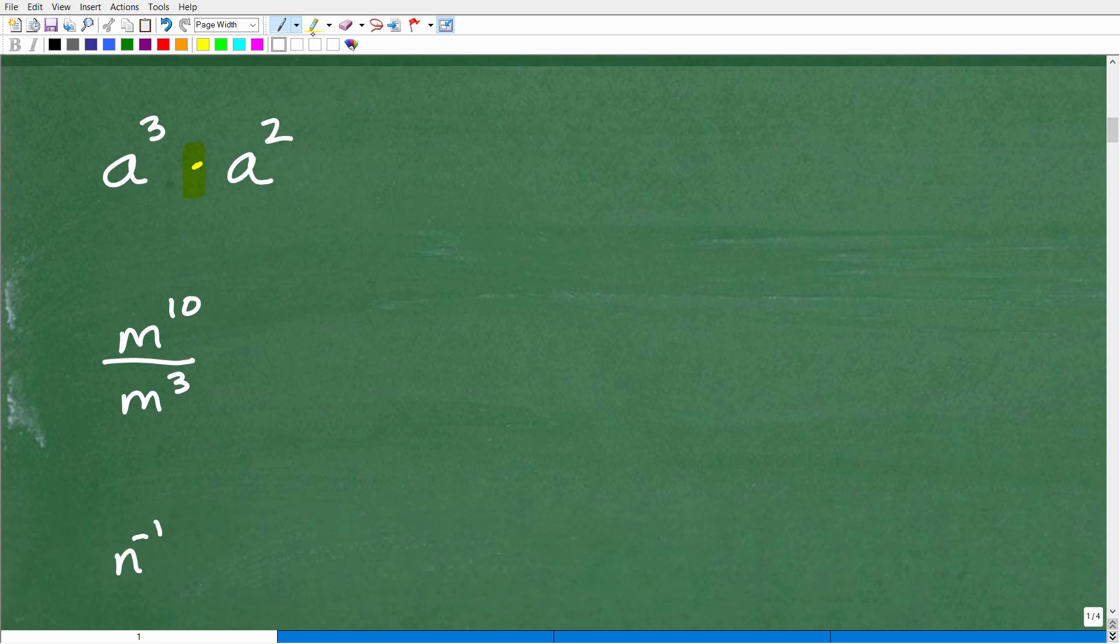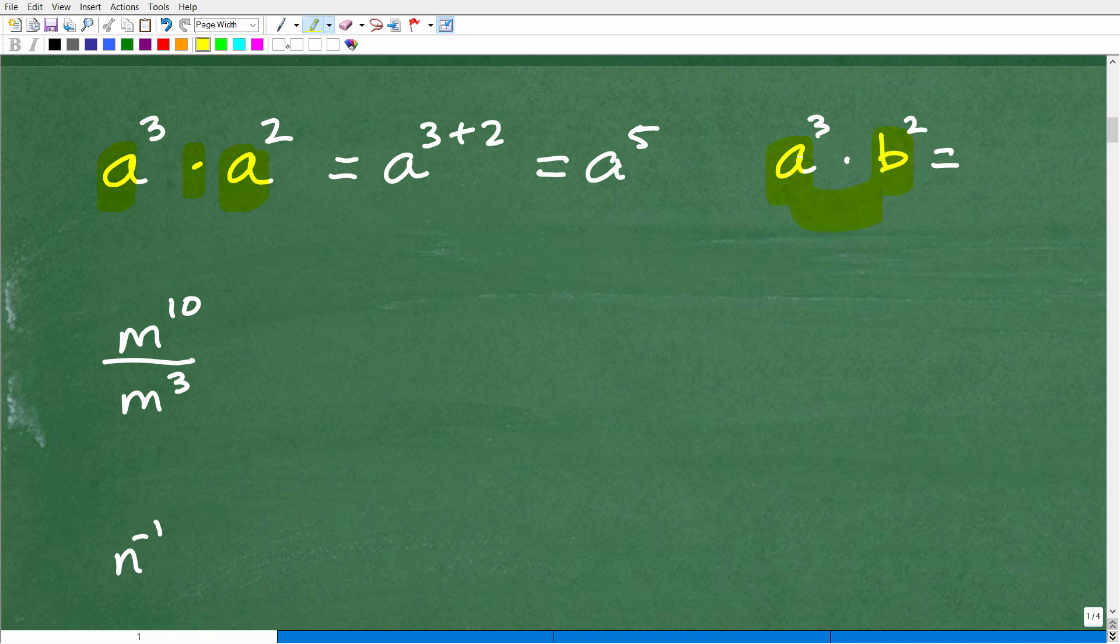All right. So here, the bases are the same, a and a. So this means I could just put that as 1a, 3 plus, let's just write it out here, 3 plus 2. That's going to be 5. So that's going to be a to the 5th. Now, to be very clear about this, what if I had a cubed times b squared? Could I do anything here? No, you cannot because these bases are different. These have to be the exact same in order to multiply. And that's the same thing with division as well. So be very, very mindful of that.